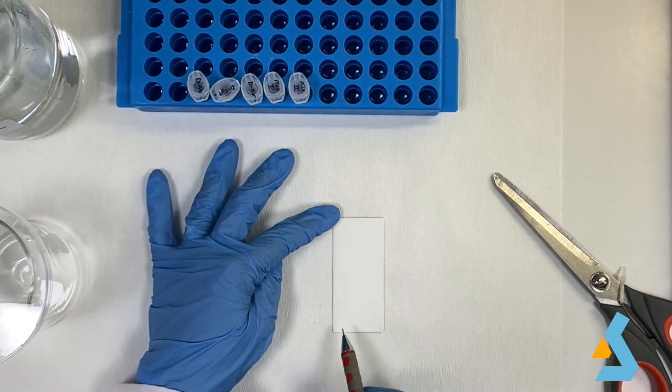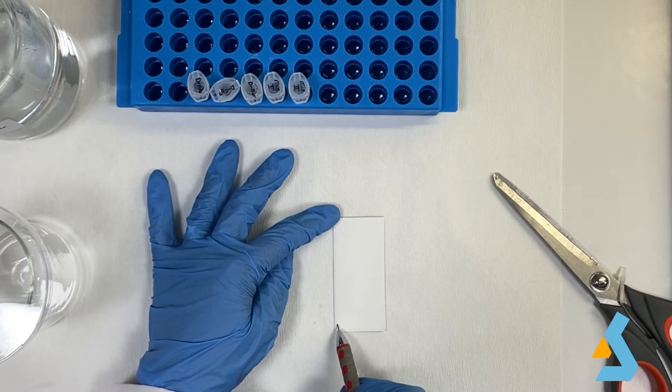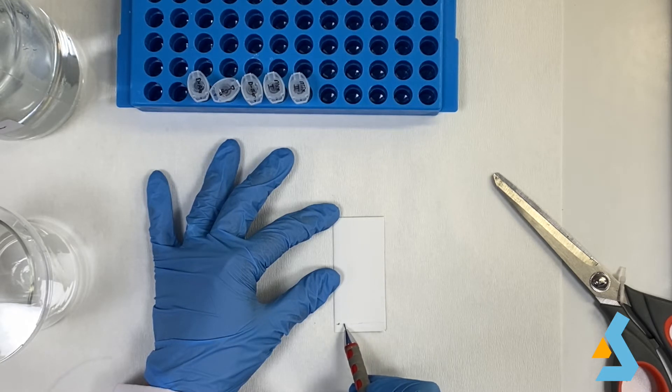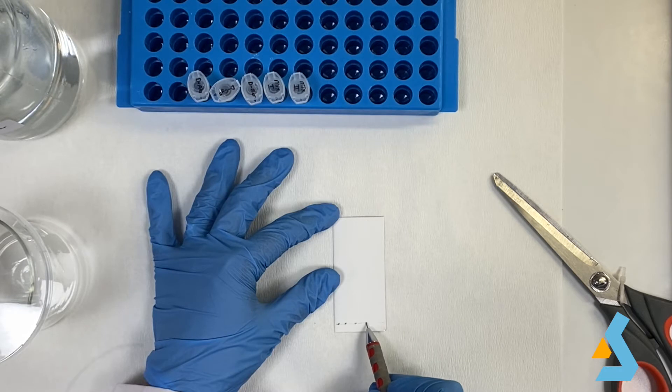We always use a pencil to mark the TLC plate because the ink in pens is soluble. Spots in which the samples will be loaded should not be very close to each other, because in that case, samples may overlap. Also, in order to eliminate the effect of evaporation, spots should be distanced from the edges of the plate.